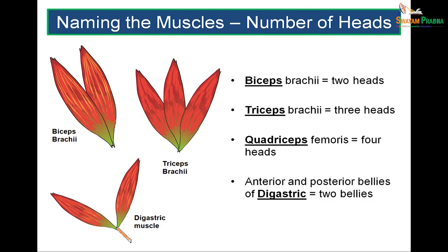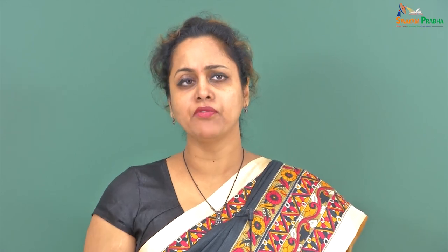Naming muscles based on number of heads: a muscle with two heads is called biceps, three heads is triceps, and four heads is quadriceps. The biceps brachii is two-headed, the triceps brachii is three-headed. The digastric muscle — di meaning two, gaster meaning belly — is the two-bellied muscle.